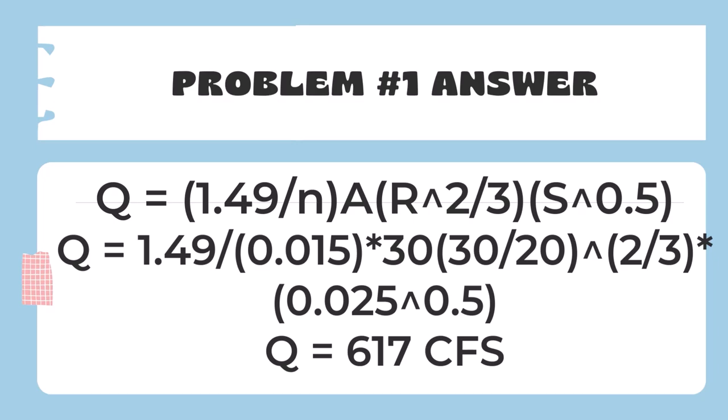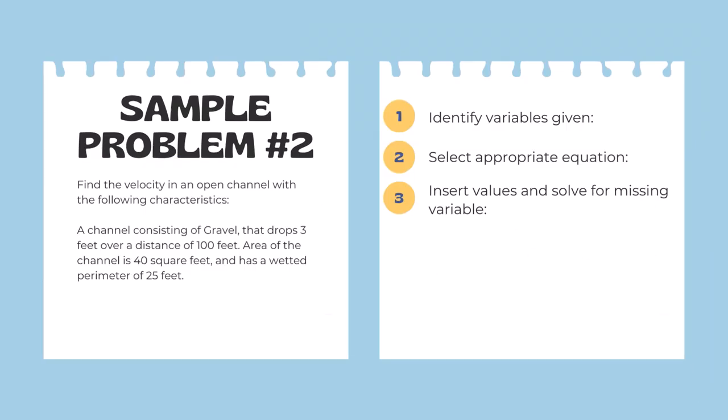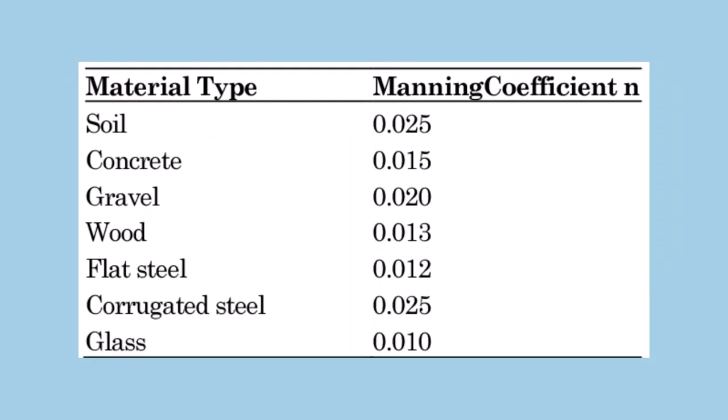What about another problem? Find the velocity in an open channel with the following characteristics: the channel consists of gravel, it drops 3 feet over a distance of 100 feet, the area of the channel is 40 square feet, and it has a wetted perimeter of 25 feet. So let's use the same process. We need to find Manning's coefficient of n again. So we know that the channel consists of gravel, so we're going to use 0.02 as our Manning's coefficient.